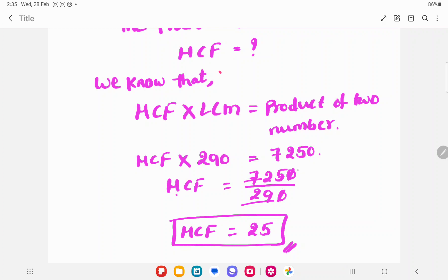Here, zero, zero cancel. 29, 725. How many times? 25 times. So, HCF is 25.